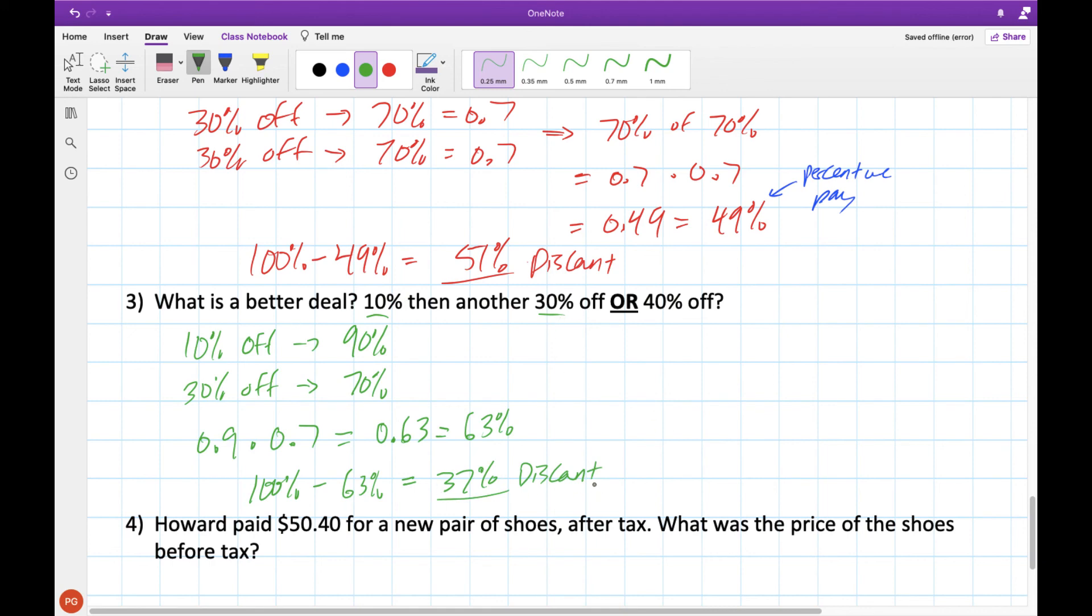Now is a 37% discount better or worse than a 40%? 37% is lower, which means we're getting less of the price taken off. So this 40% is a better deal. The intuition for why that is, when we take 10% off, right, now we're down to 90%. And when we take a fraction of this percentage right here, right, we're taking this same 30% chunk off of a smaller number. So it's not the same as taking 30% off of our original price. This is taking 30% off of a smaller price.